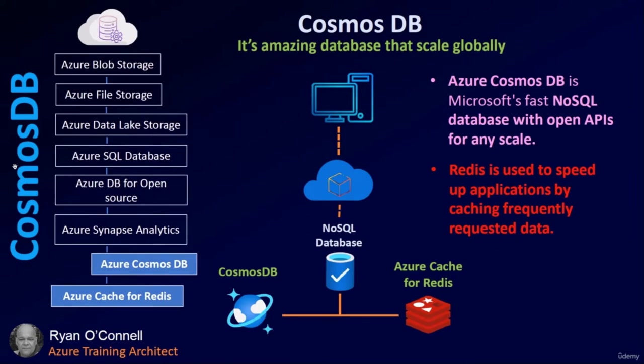We can't talk about databases without mentioning Cosmos DB — an amazing database that scales globally. Azure Cosmos DB is Microsoft's fast NoSQL database with open APIs for any scale. On top of that, we have Azure Redis Cache, which is used to speed up applications by caching frequently requested data.